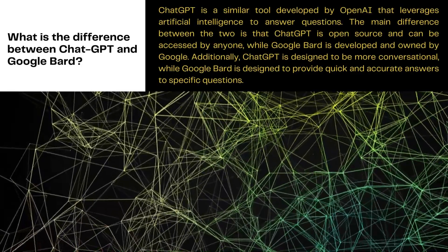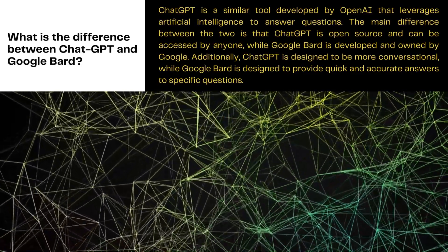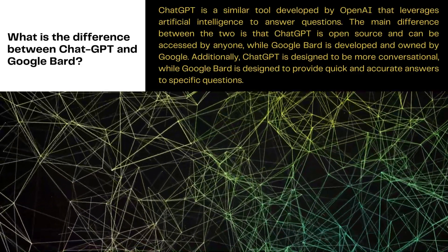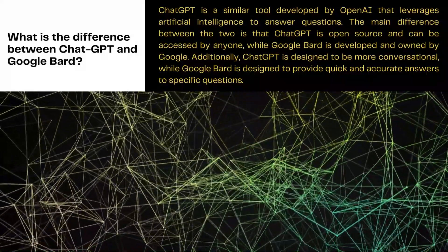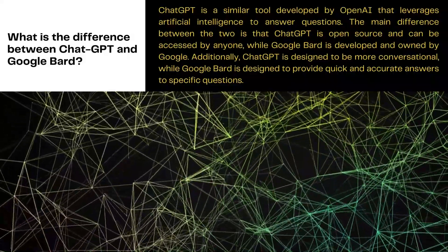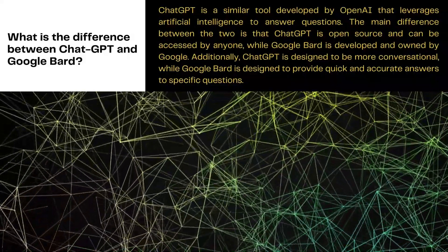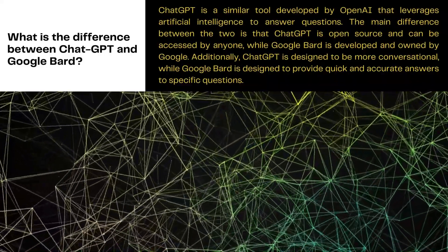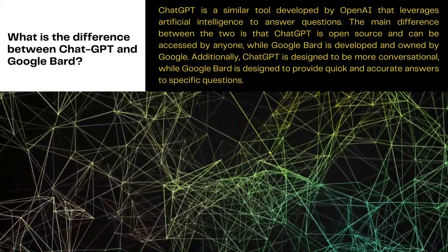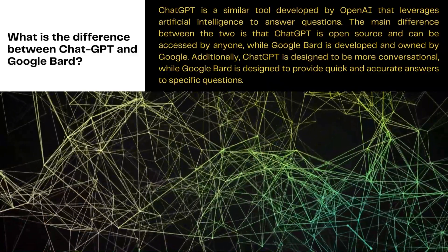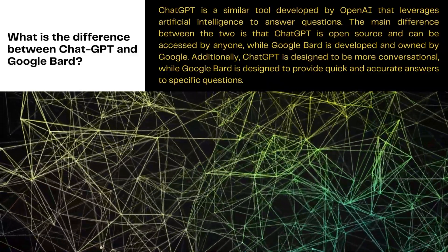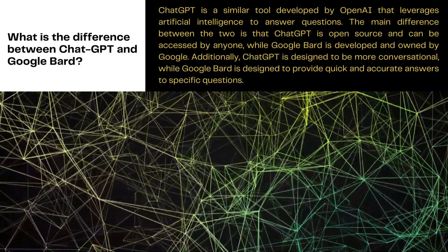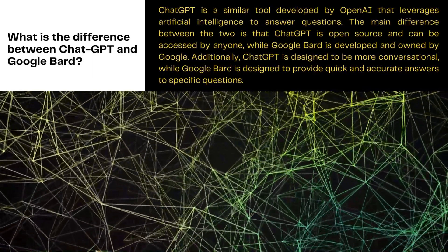What is the difference between ChatGPT and Google Bard? ChatGPT is a similar tool developed by OpenAI that leverages artificial intelligence to answer questions. The main difference between the two is that ChatGPT is open-source and can be accessed by anyone, while Google Bard is developed and owned by Google. Additionally, ChatGPT is designed to be more conversational, while Google Bard is designed to provide quick and accurate answers to specific questions.